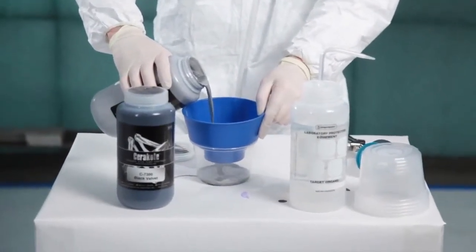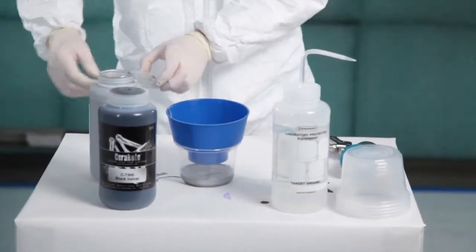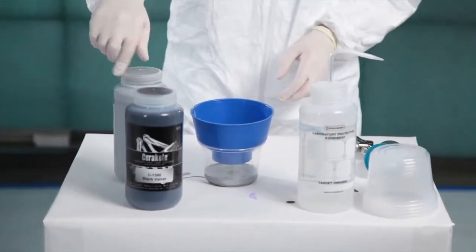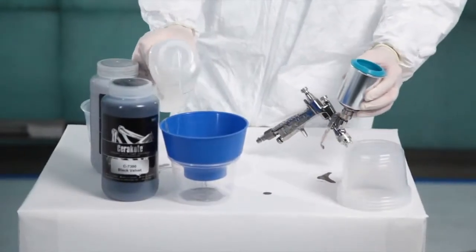Pour the coating through a disposable, automotive-type paint filter or a reusable filter. This is done to ensure that no contaminants will be sprayed on the finished product. Clean all containers and equipment with acetone.